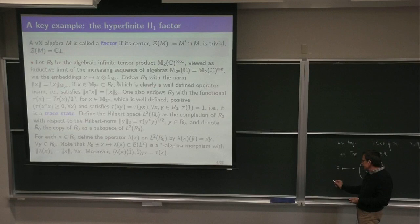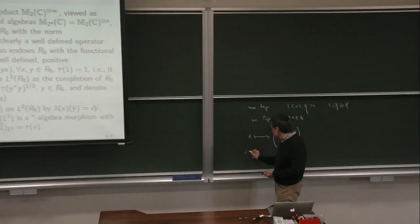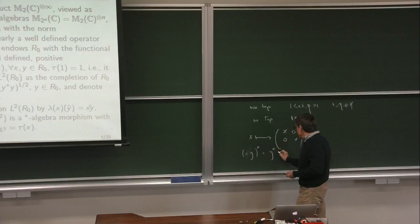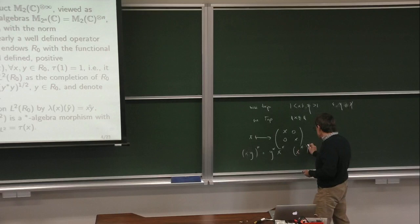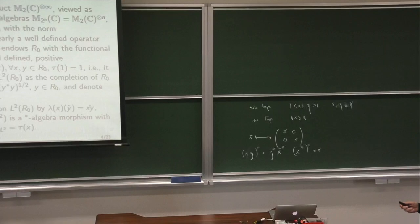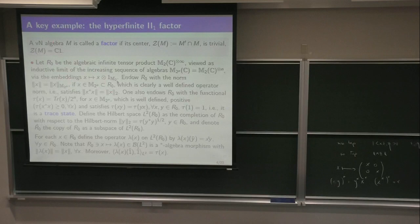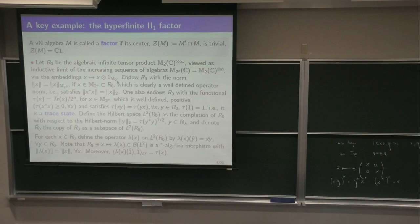R₀ comes with a functional: the normalized trace, denoted tau of x. That's the usual trace — the sum of diagonal entries — divided by 2ⁿ when x is in the 2ⁿ by 2ⁿ matrix algebra. It's positive and satisfies tracility. This is well-defined because of the normalization: the normalized trace doesn't depend on where you take it. It's a positive functional; positive elements are of the form x* x, and it satisfies the tracility axiom: trace(xy) = trace(yx). Because of being normalized, the trace of one is one at each step, so this gives a state. Because of tracility, this is a trace state.